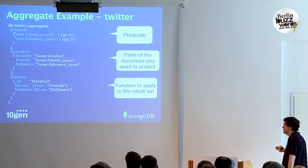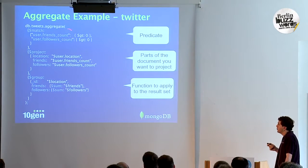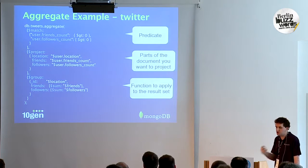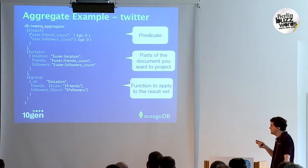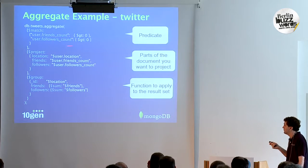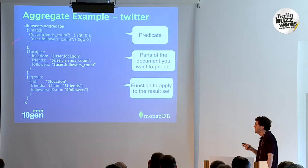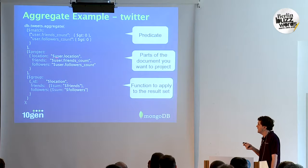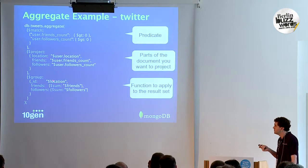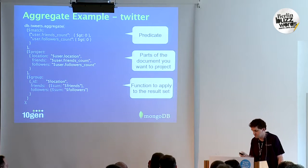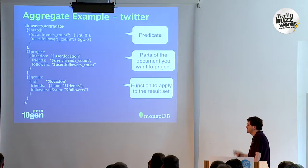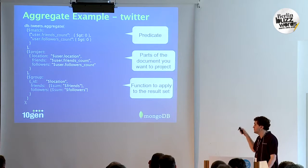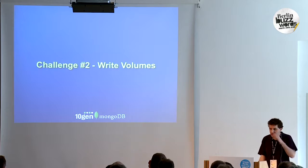Aggregation becomes quite interesting. Here's an aggregation example with Twitter: in one statement you say match all my tweets where the user has a follower count greater than zero, project out a new document with location, user, number of friends, and number of followers, then group by location. You can do GROUP BY style statements in Mongo, and you get a consistent JSON representation from top to bottom.